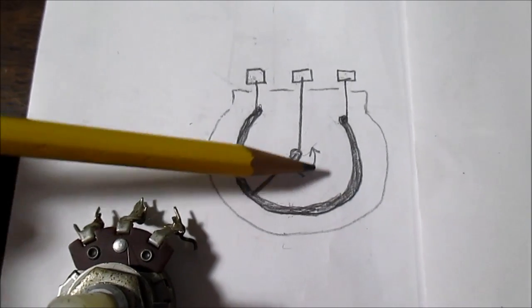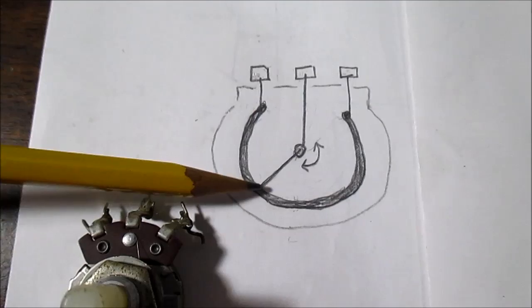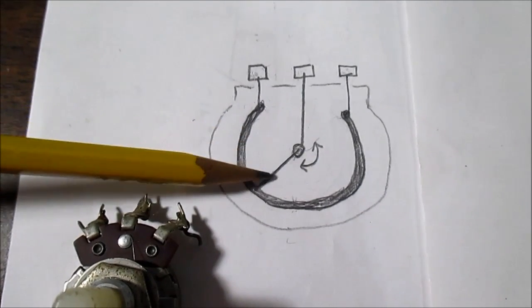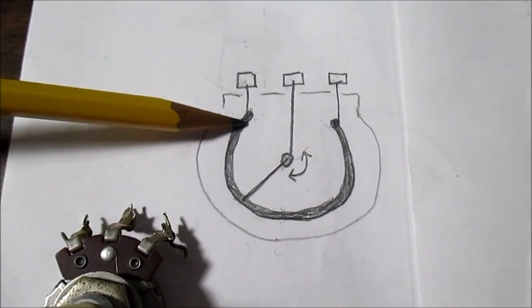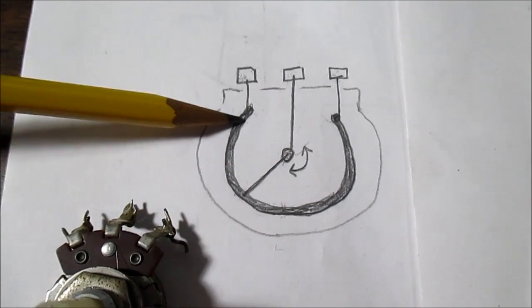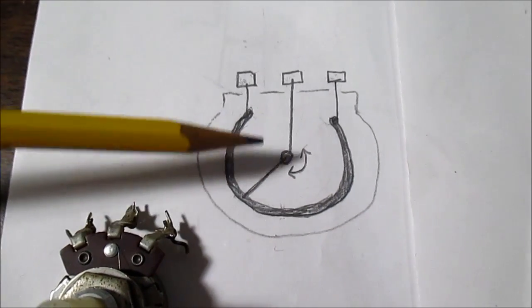Now this is not exactly what it looks like inside, I'm just simplifying it for explanation. So as you move the wiper arm to different positions on the resistive material, you change the resistance between the center lug and the outer lugs.